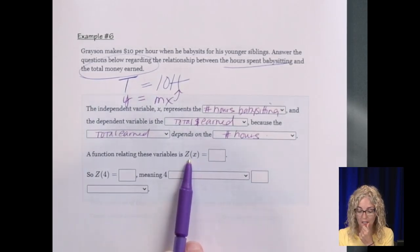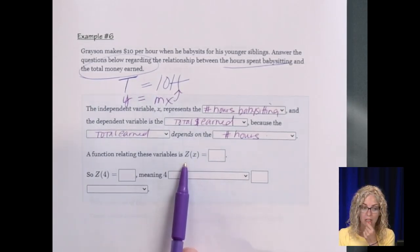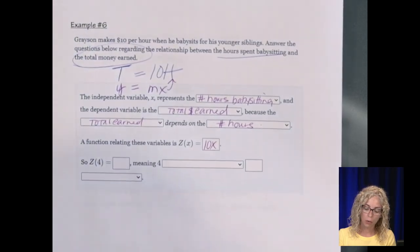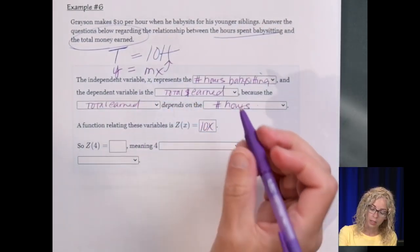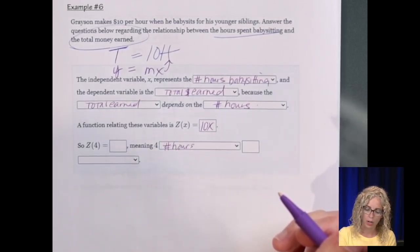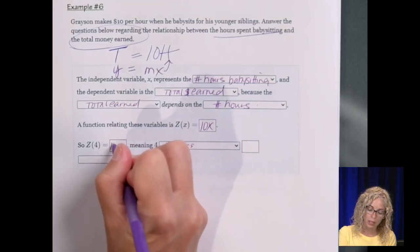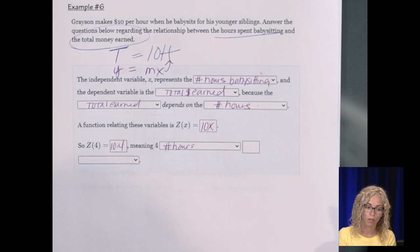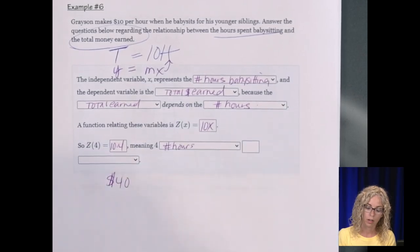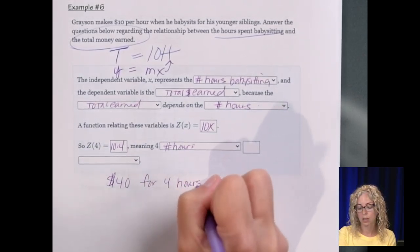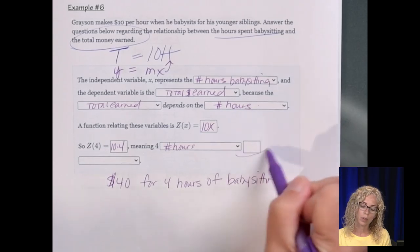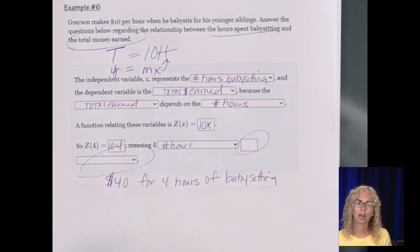In terms of Z of X, so function relating to these variables is Z of X, that would be 10X, $10 per hour. So Z of 4, meaning 4 times the number of hours babysitting. I don't quite know what the drop-downs are. Z of 4 would be 10 times 4, or 40. So $40 for 4 hours of babysitting. I don't know what this blank and this blank is because I no longer have it on my screen.